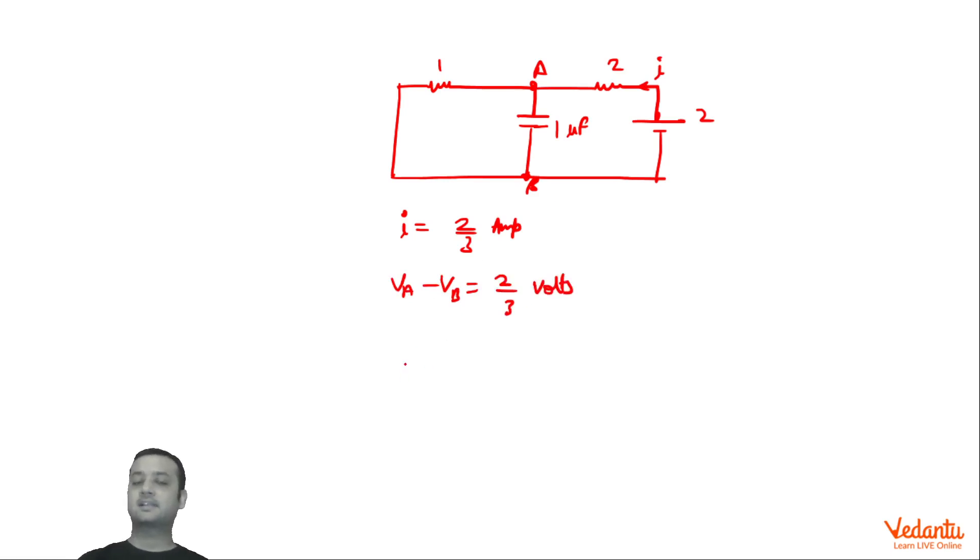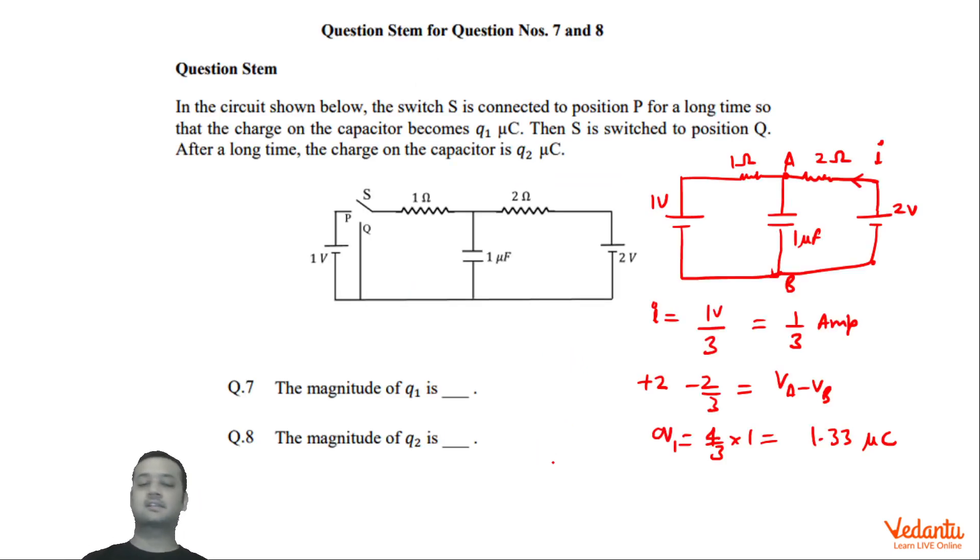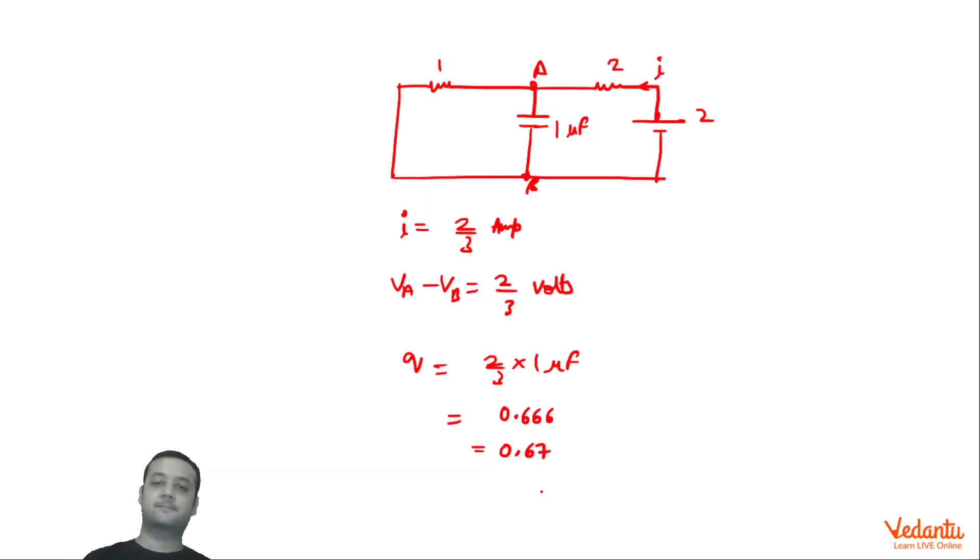Hence we can say that Q on this will be 2 by 3 into 1 microfarad which is nothing but 0.666 which can be truncated to 0.67. In this case we were required to write the answer in two places of decimal. So the answer will become 0.67. Rounded. We were required to write round off till two places of decimal.